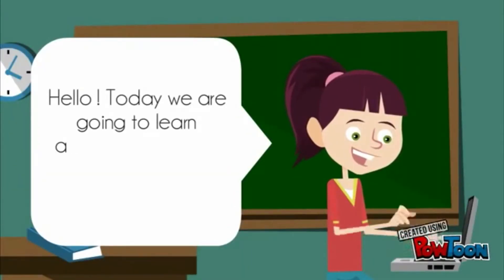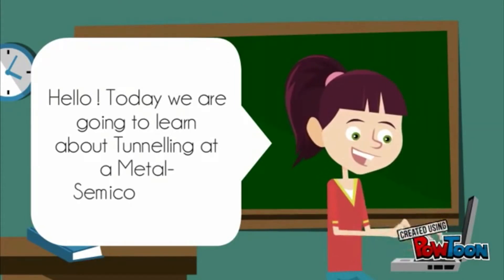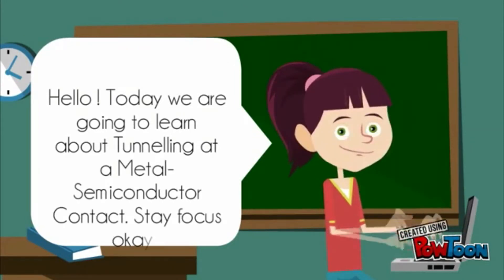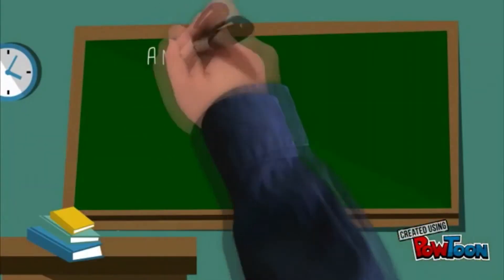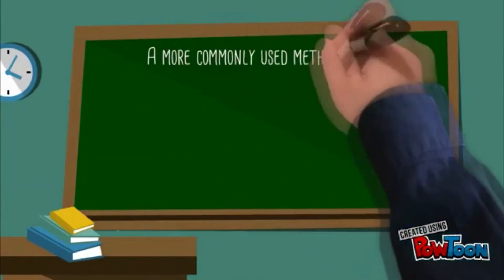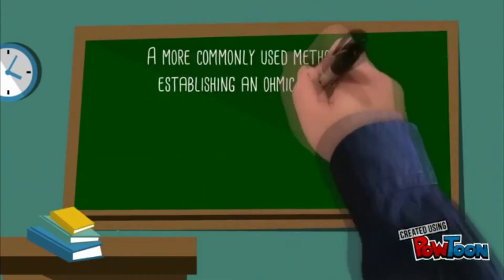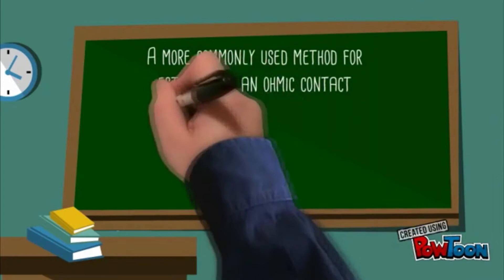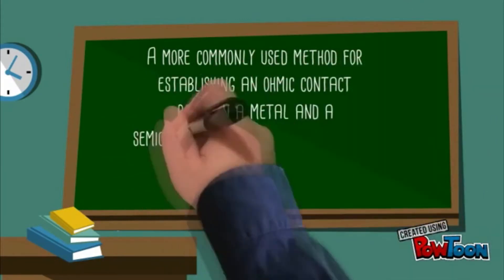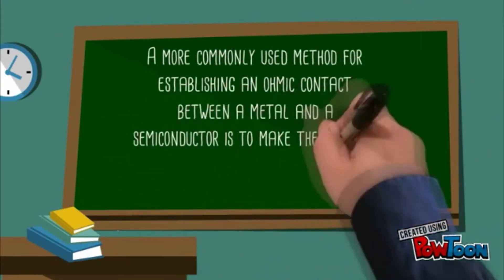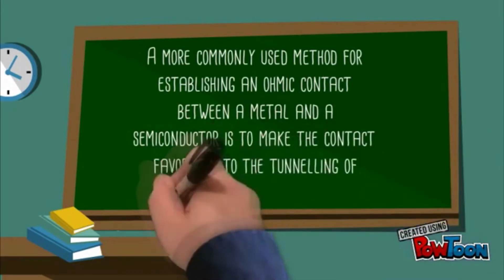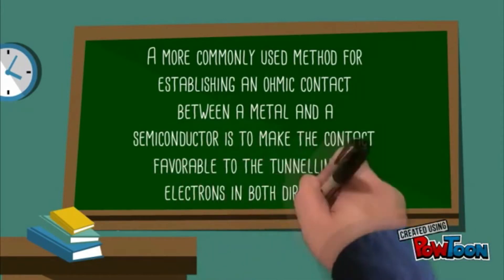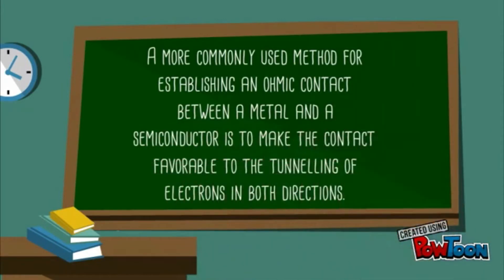Today we are going to learn about tunneling at a metal-semiconductor contact. Stay focused. A more commonly used method for establishing an ohmic contact between a metal and a semiconductor is to make the contact favorable to the tunneling of electrons in both directions.